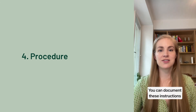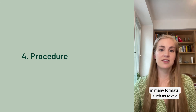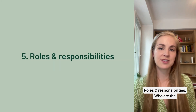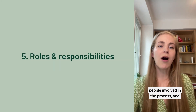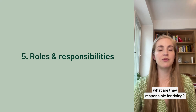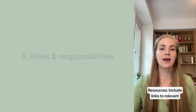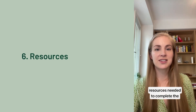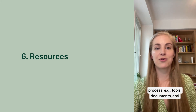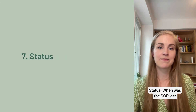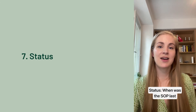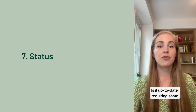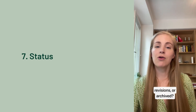Five, roles and responsibilities — who are the people involved in the process and what are they responsible for doing? Six, resources — include links to relevant resources needed to complete the process, for example tools, documents, and templates. Seven, status — when was the SOP last updated? Is it up to date, requiring some revisions, or archived?